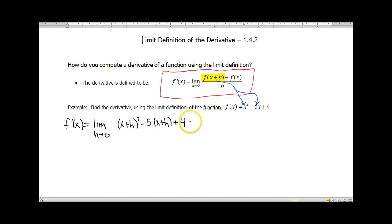Then we have a minus sign. The second part of our formula is subtracting off the function. So I'm going to put that in parentheses since our function has more than one piece to it. That's x³ - 5x + 4. And this whole big messiness here is going to be divided by h.